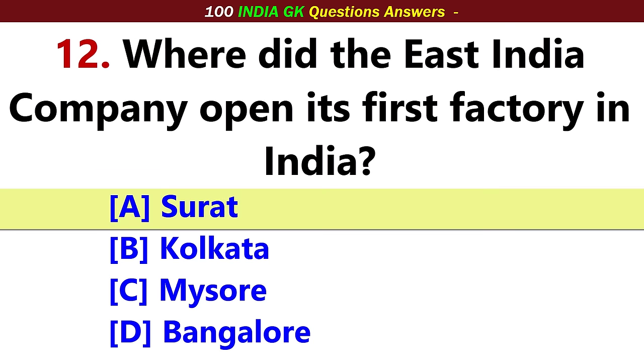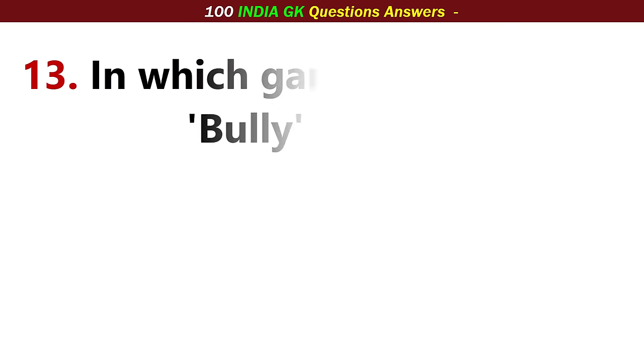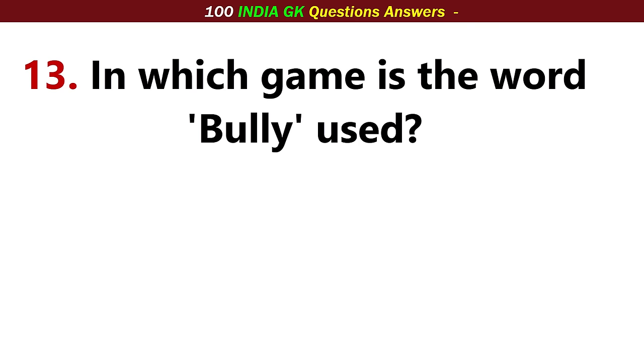Where did the East India Company open its first factory in India? Option A: Surat.